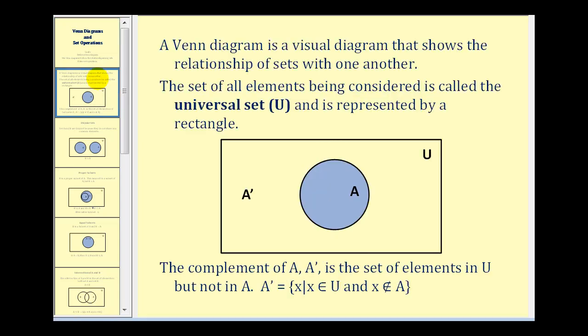A Venn diagram is a visual diagram that shows a relationship of sets with one another. The set of all elements being considered is called the universal set, as represented by a rectangle as we see here.